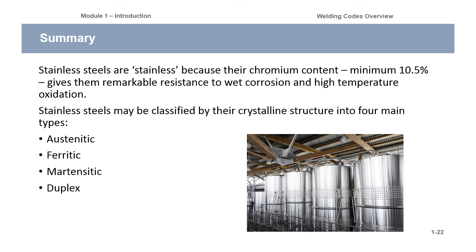Summary: Stainless steels are stainless because of their chromium content — 10.5% gives them resistance to wet corrosion and high-temperature oxidation. Stainless steels are classified by their structures: austenitic, ferritic, martensitic, and duplex are the main ones, with subcategories like precipitation hardening. There's a whole world to this and we've just touched barely the edge of it, but hopefully this gives you a greater understanding of stainless steels, their uses, and some of the vocabulary involved.